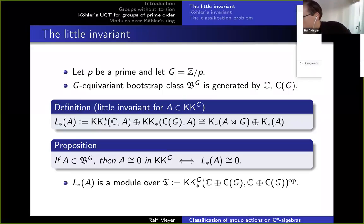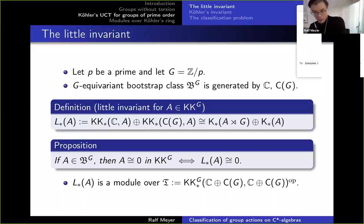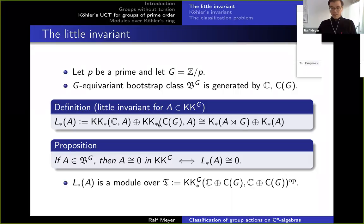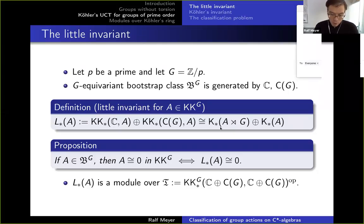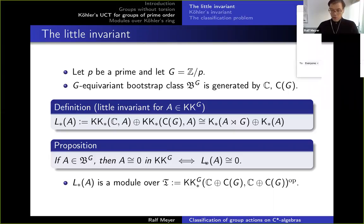Standard isomorphisms in KK theory tell you — and I note there's a typo on the slide, these should be KKG groups — that the KKG group from ℂ to A is just the K-theory of the crossed product, and from C(G) you get the K-theory of A. These are certainly obvious invariants for an action: the K-theory of A and the K-theory of the crossed product. This invariant isn't good enough to classify, but it detects zero: you are zero in KKG if and only if this invariant vanishes.